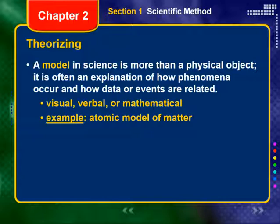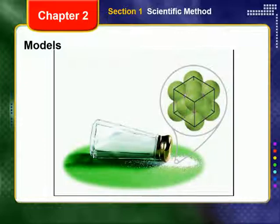When the data from experiments show that the predictions of the hypothesis are successful, scientists typically try to explain the phenomena they are studying by constructing a model. A model in science is more than a physical object. It is often an explanation of how phenomena occur and how data or events are related. Models may be visual, verbal, or mathematical. One of the most important models in chemistry is the atomic model of matter, which states that matter is composed of tiny particles called atoms.